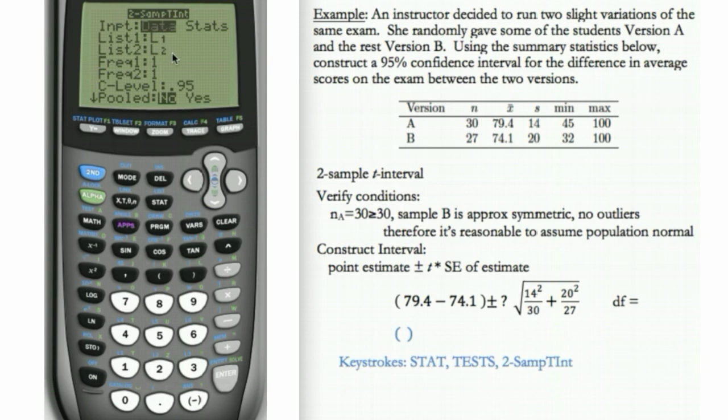And here, we can enter the data if we have it. If we had all the data, we could enter it into list L1 and L2 ahead of time. Leave the frequency 1. But in this case, we have the summary stats. So we'll go hit the right arrow over to stats, and hit enter.